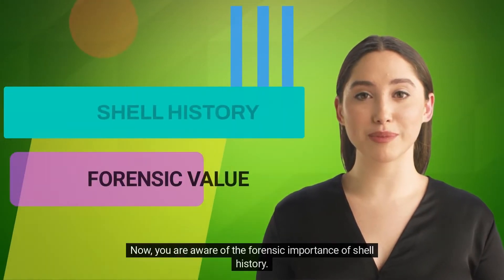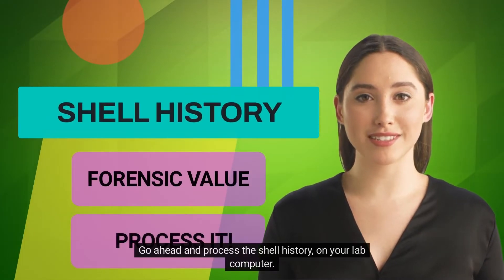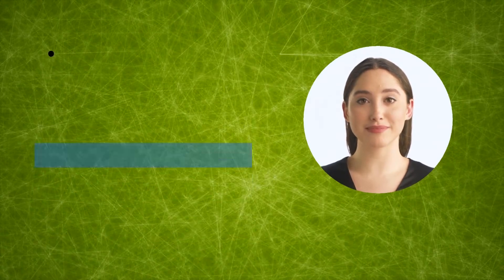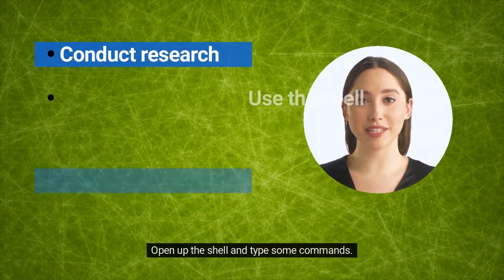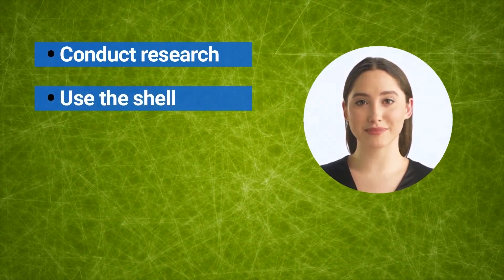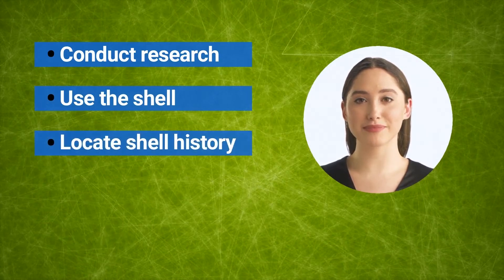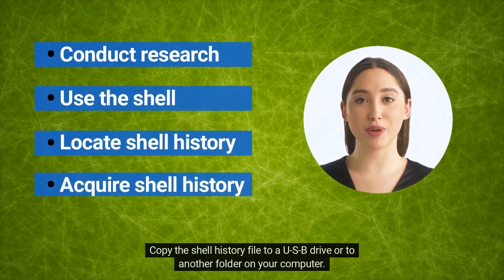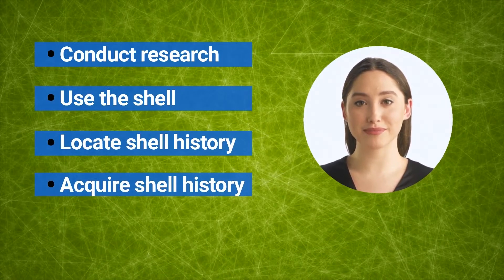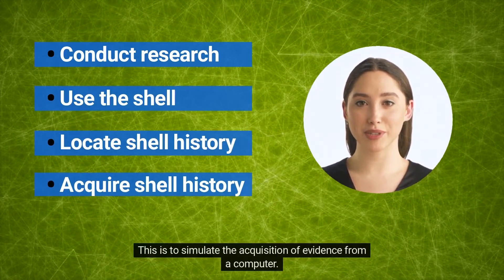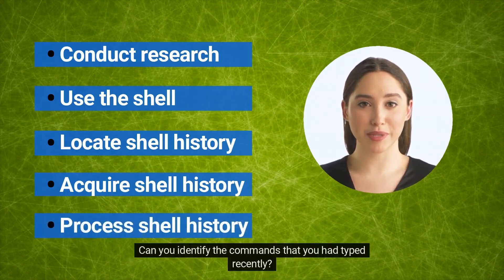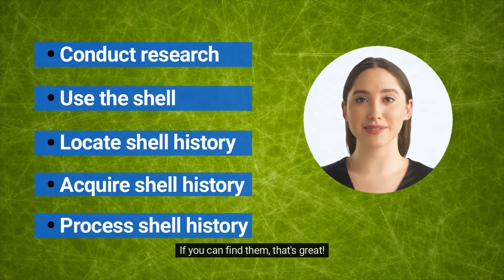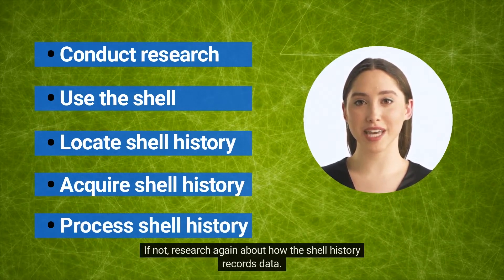Now that you are aware of the forensic importance of shell history, go ahead and process the shell history on your lab computer. Research where the shell history file is stored and how it records typed commands. Open up the shell and type some commands. Find the shell history file on your computer. Copy the shell history file to a USB drive or another folder to simulate the acquisition of evidence. Then process the contents of the shell history file — can you identify the commands you typed recently?